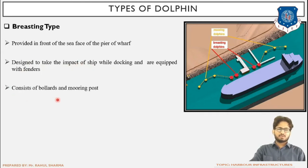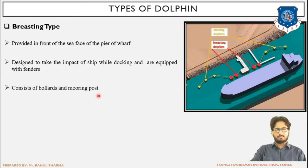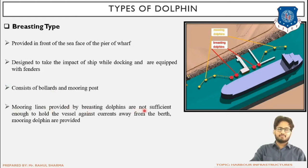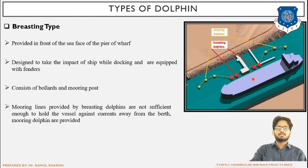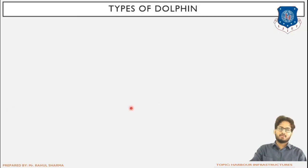Dolphins consist of bollards and mooring cleats. These are mooring accessories — the specific points with which the thread or rope of the ship is tied up. We will cover mooring accessories in detail in upcoming sessions. Mooring lines are provided because the resting dolphins alone are not sufficient to hold the vessel against current away from the berth — when the ship moves away due to currents, waves, or wind, the forces might not be handled only by the resting dolphin, so mooring dolphins are provided as a measure of safety.